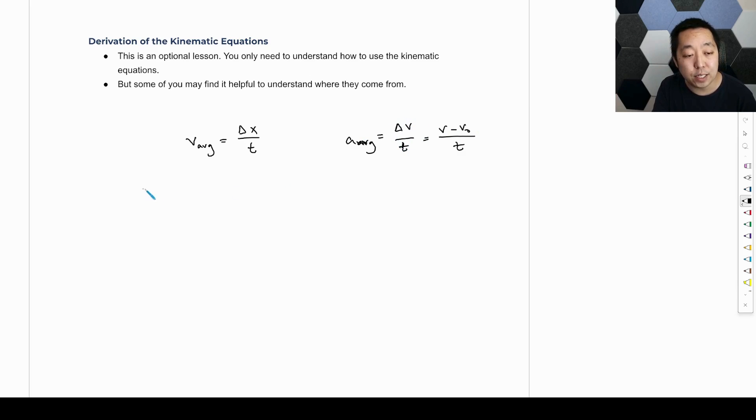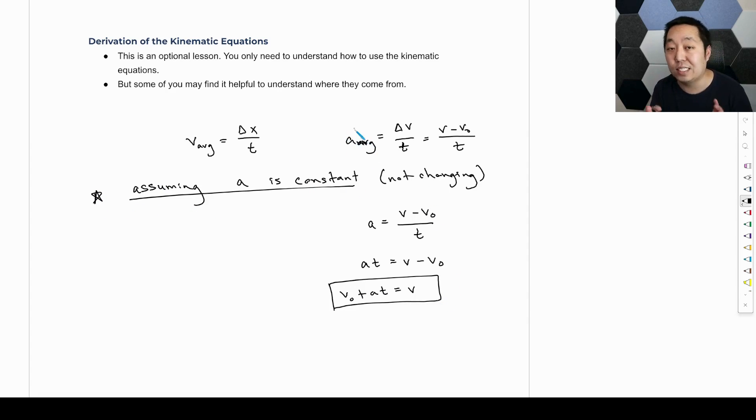And so what ends up happening is assuming the acceleration is constant, it means it's not changing. All right, that's what we mean by constant. Then these equations, there's a couple of things that will come out of here. So the average acceleration will just be a single value, and that will be V minus V zero over T. You can multiply by the time here equals V minus V zero and add the V zero. So you get V zero plus AT equals the final velocity. So that's our first equation. Again, super important that we make that assumption because if this is changing, then it's not necessarily true that the rearrangement is going to work this way.